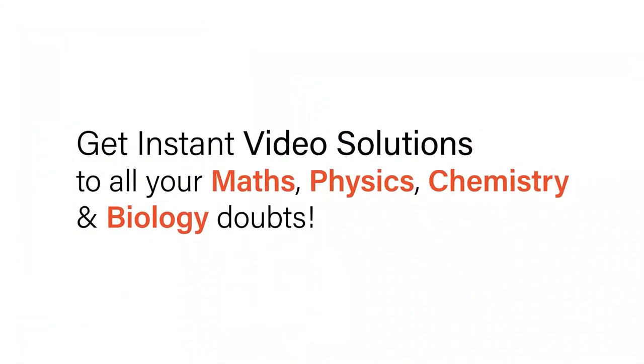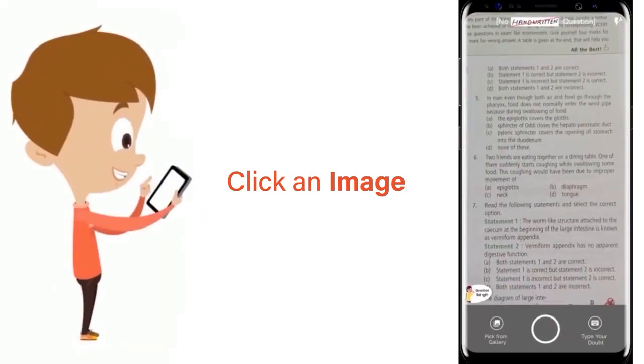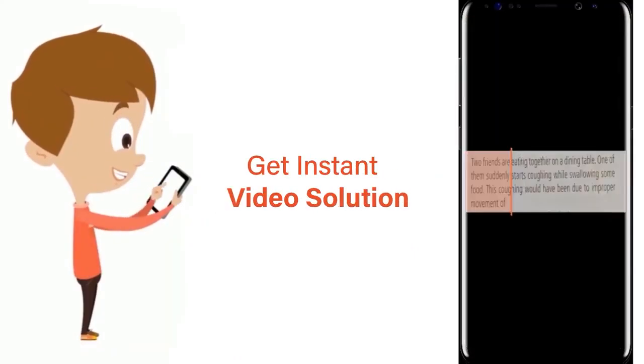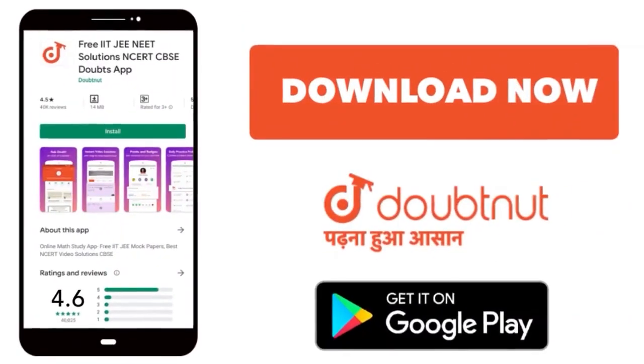With Doubtnet, get instant video solutions to all your math, physics, chemistry, and biology doubts. Just click the image of the question, crop the question, and get instant video solution. Download Doubtnet app today. Question is: At what angle of electric dipole moment with uniform electric field is potential energy maximum?